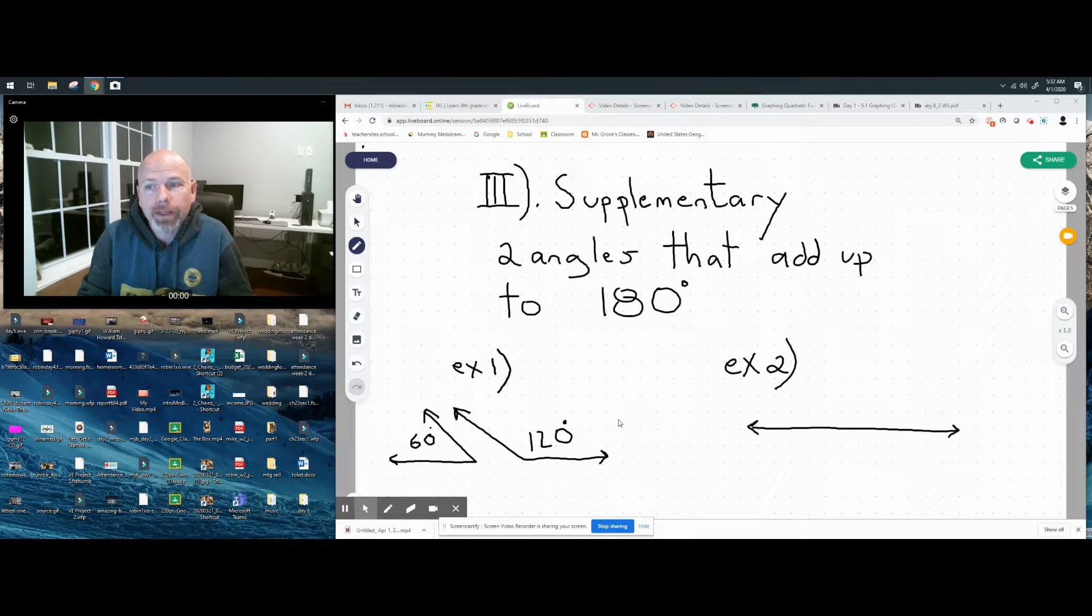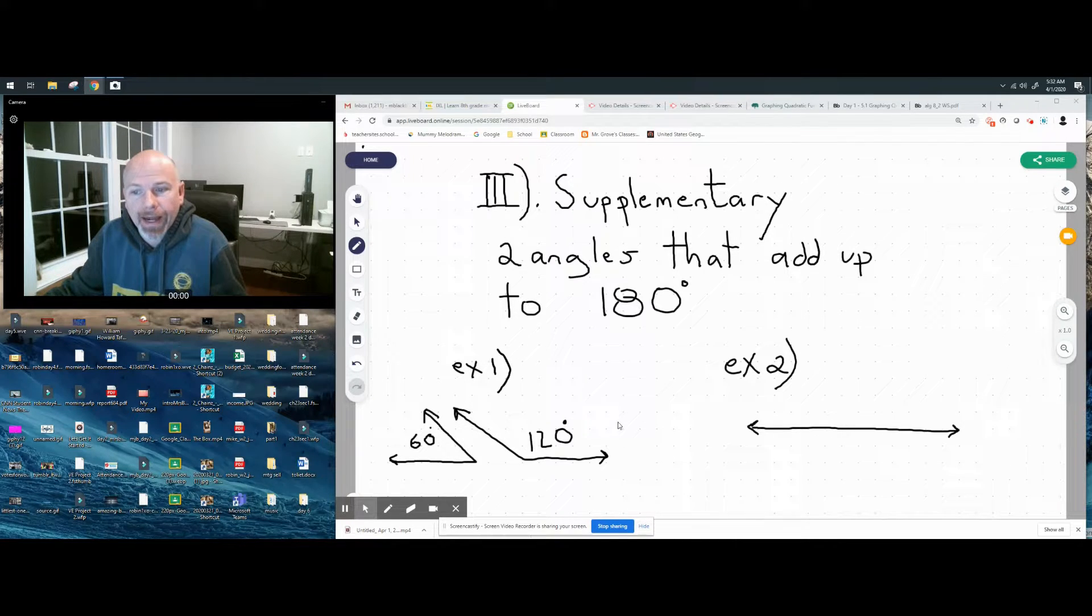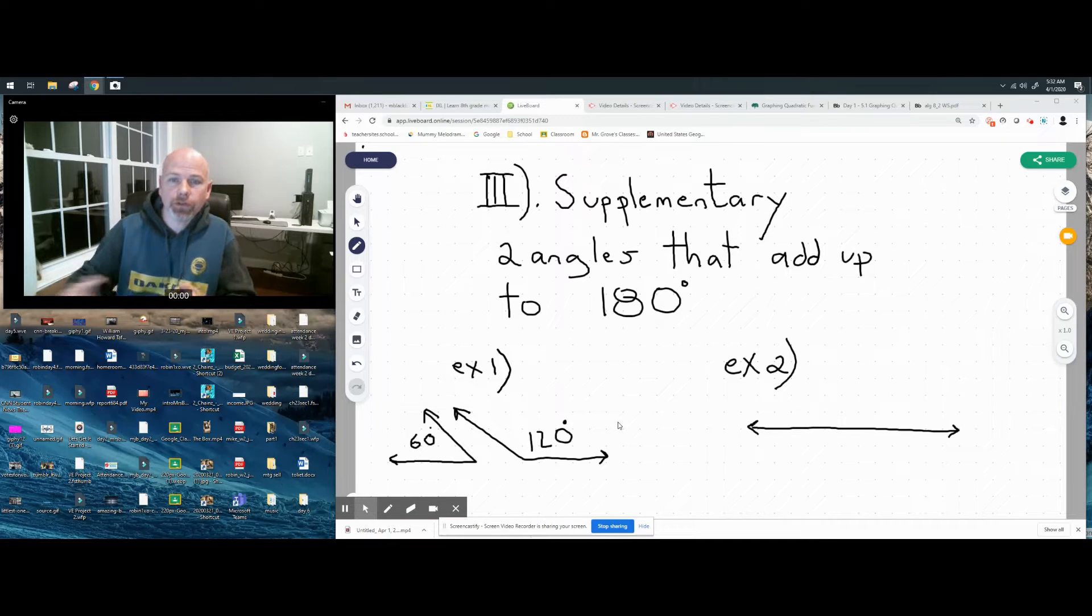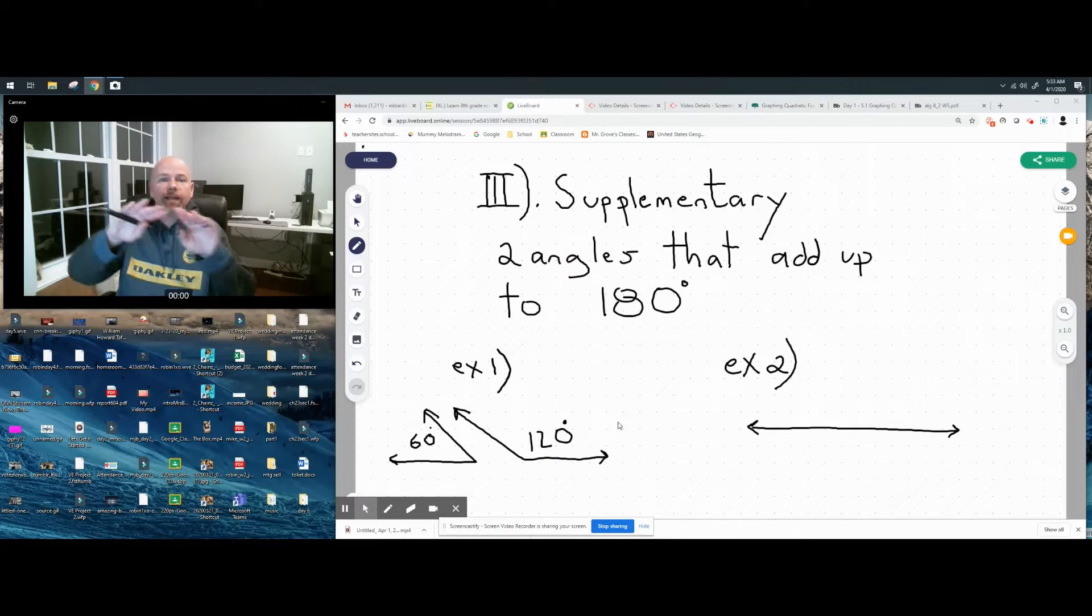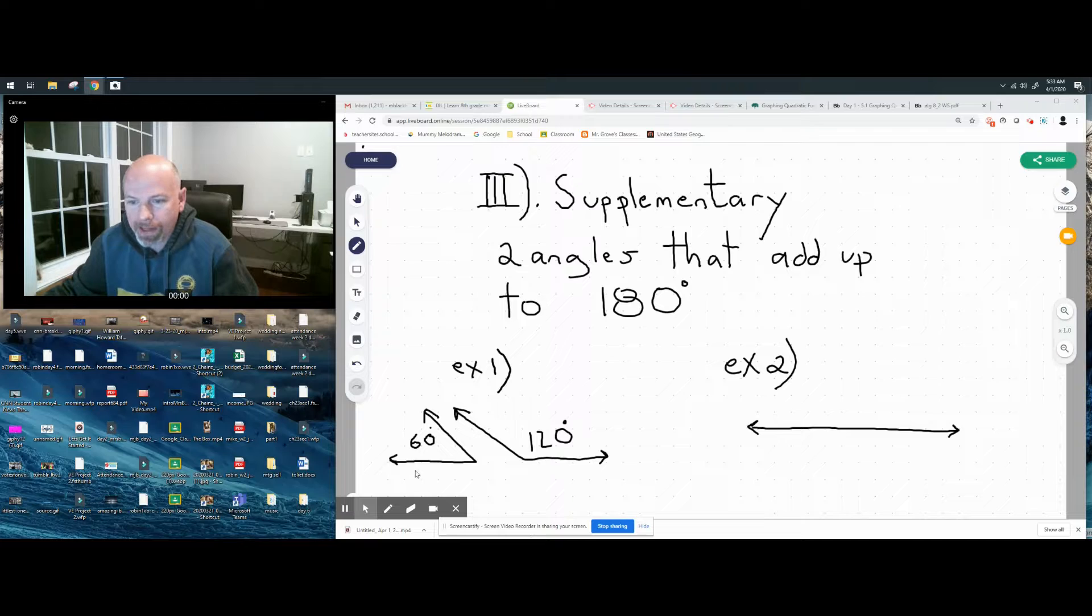Let's check out this third type of angle relationship, which is known as supplementary angles. Supplementary angles are two angles that add up to 180. So it's two angles that when you put them together they form a straight line - a straight line is 180. We have example one, and we see there's two angles, they're not connected, but if we were to add their values they would equal 180. These are supplementary. They don't need to be touching.